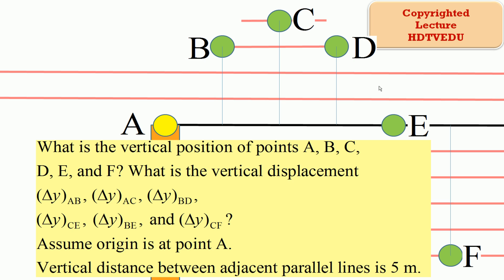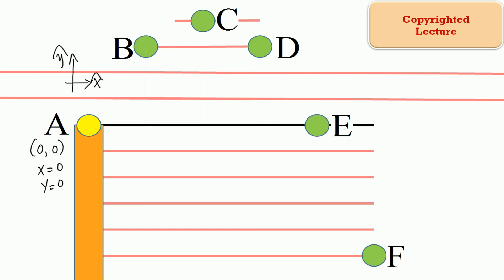The distance between these two parallel lines is 5 meters. At point A, x equals 0, y equals 0.